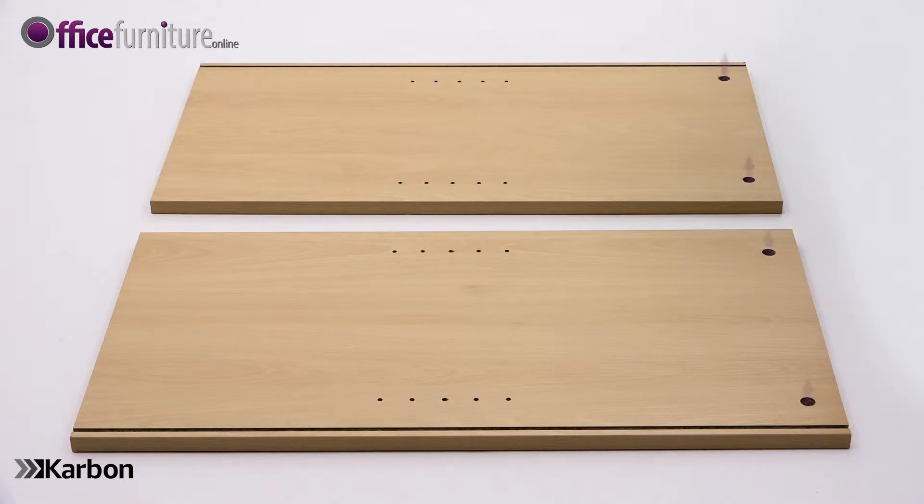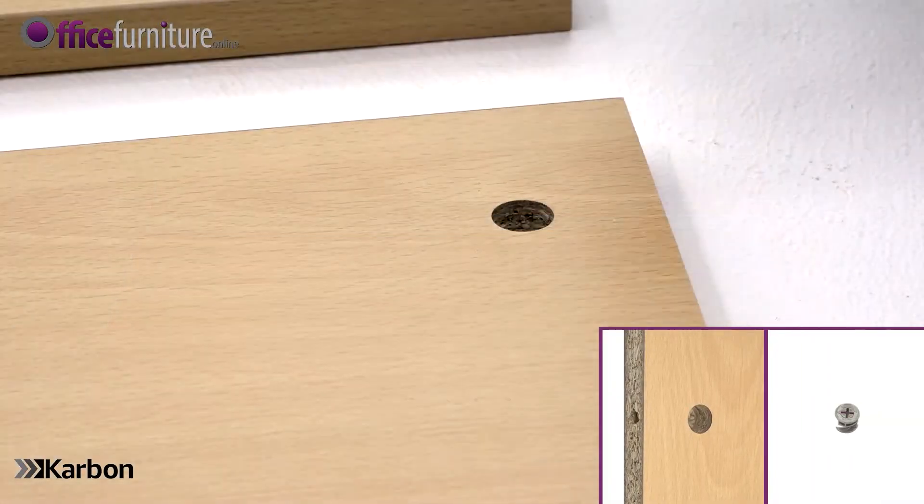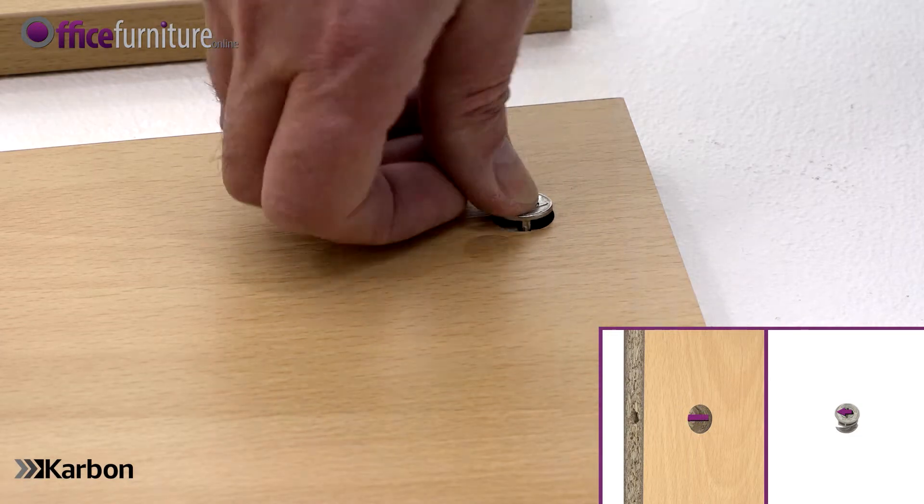Next, lay the side panels on the floor with the holes facing upwards. Insert two cams into each one, making sure the arrow on the cams point towards the outer edge of the panel.